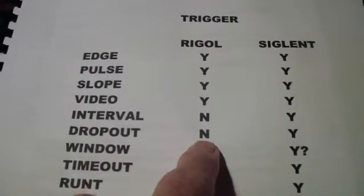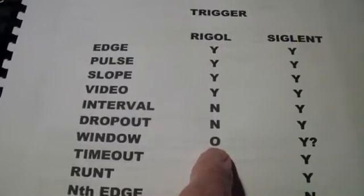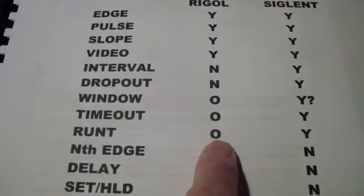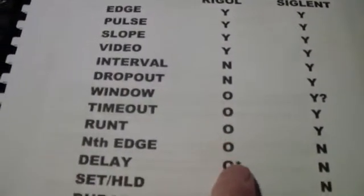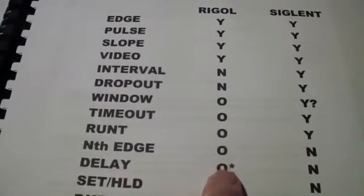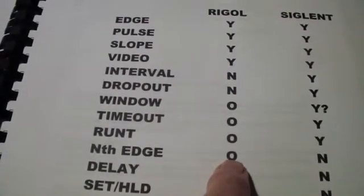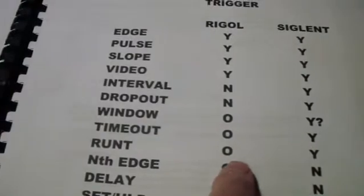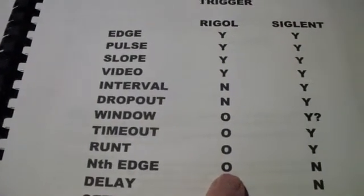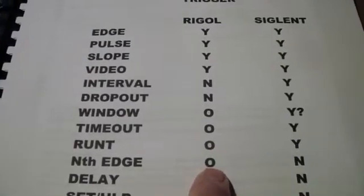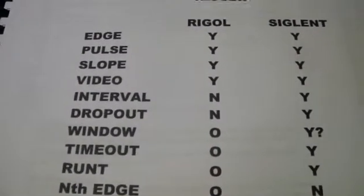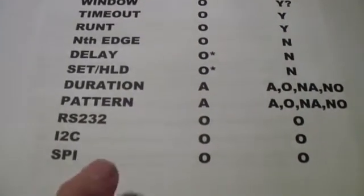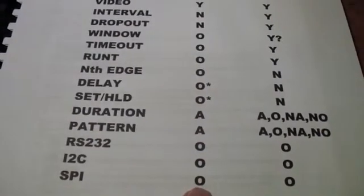So there are two trigger modes available in the Siglent that I could not find anything equivalent to in the Rigol — and we've talked about window. I'm going to move on in a minute and look at the Rigol for runt triggering and also for nth edge triggering. I'm going to skip these for a little bit, mainly because runt is the same in both units as far as I can tell. Nth edge is special — only the Rigol appears to have that, although you do have to pay extra for it.